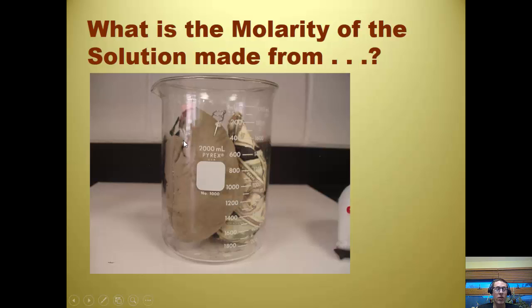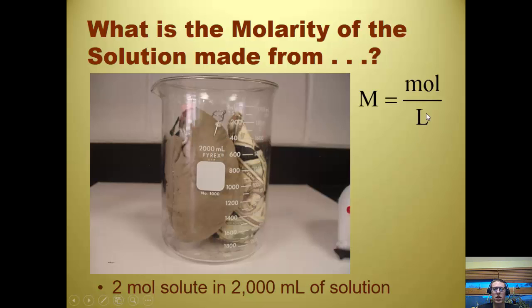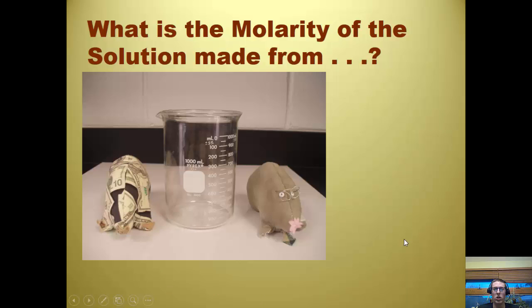Now we have two moles, but we also have them in two liters. Two moles of solute in 2,000 milliliters of solution. 2,000 milliliters is two liters. Molarity is moles over liters. We have two moles over two liters. That's going to be one molar.